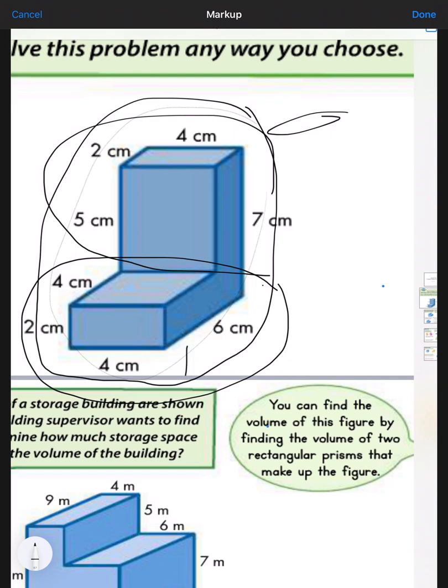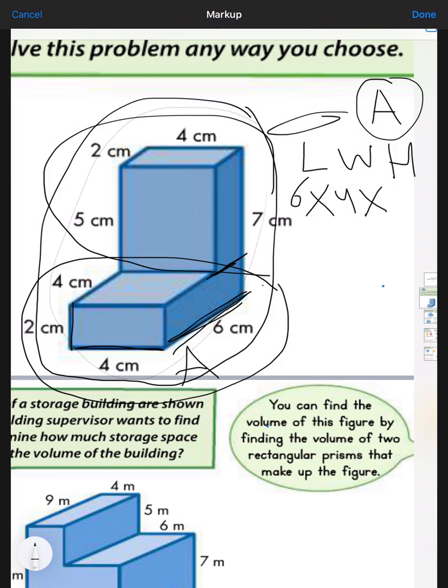Prism A is the bottom one. We need length, width, and height. In prism A, we have the length as 6, the width as 4, and the height as 2. So we have 6 multiply 4 multiply 2, which gives us 48 cm³.